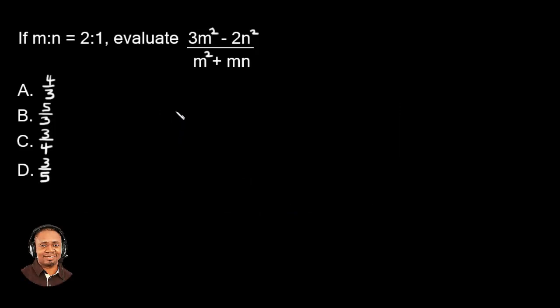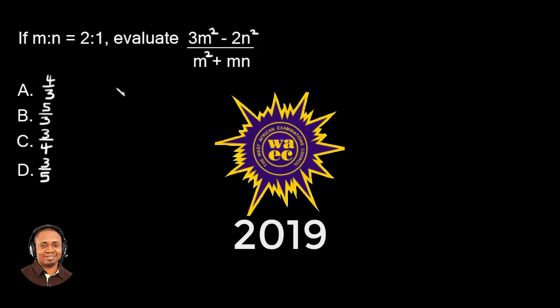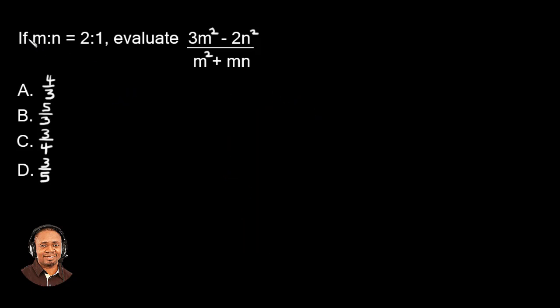Hi, I'm Oluwakemi. I'm so excited to have you here again to another WAEC Math question 2019. If m ratio n equals 2 ratio 1, evaluate 3m squared minus 2n squared divided by m squared plus mn.